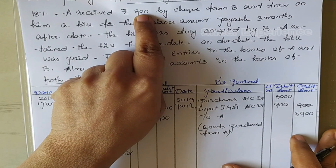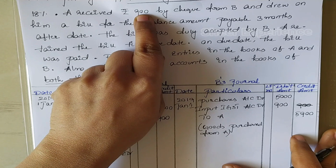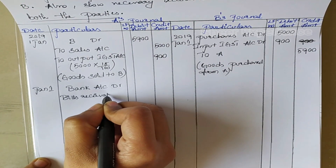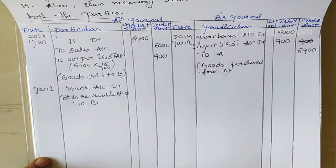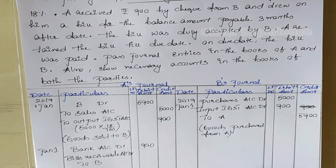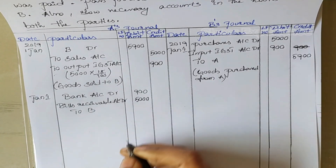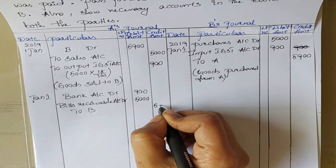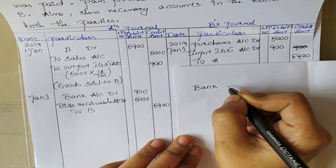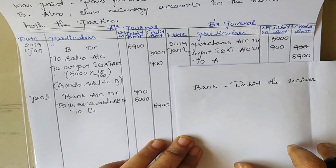A received 900 by check from B and drew on him a bill for the balance amount. Journal entry in A's books is: Bank Account debit, Bills Receivable Account debit, to B. A received 900 from B, so Bank Account gets 900 in the debit column. Bank comes under personal account, so as per the rule we debit the receiver. Money is coming into our bank account — bank is an asset, and whenever asset increases we debit it.